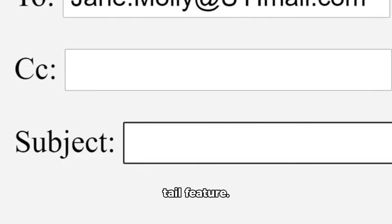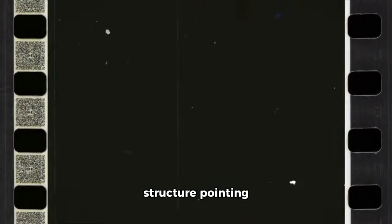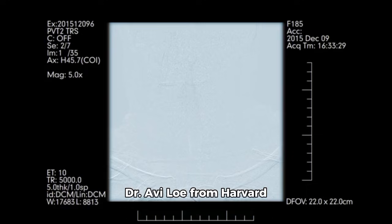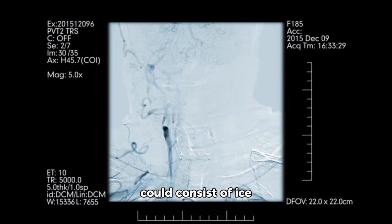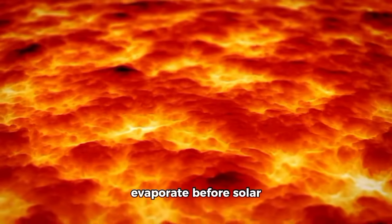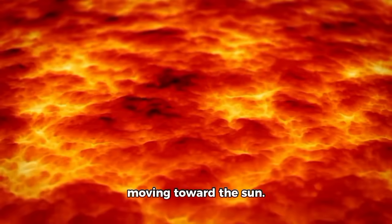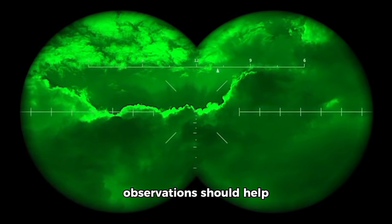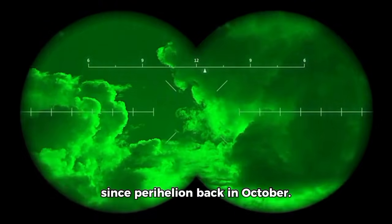Second, the anti-tail feature. This has been one of the most discussed aspects of 3I Atlas. Images taken by Thai astronomer Tezak Talawang on December 13th showed a prominent structure pointing toward the sun, something that's unusual for comets. Dr. Avi Liu from Harvard published an analysis suggesting this anti-tail could consist of ice fragments shedding from the sun-facing side of the comet. These tiny particles evaporate before solar radiation pressure can push them away, creating the appearance of material moving toward the sun. The closest approach observations should help confirm whether this feature is still present and how it has evolved since perihelion back in October.